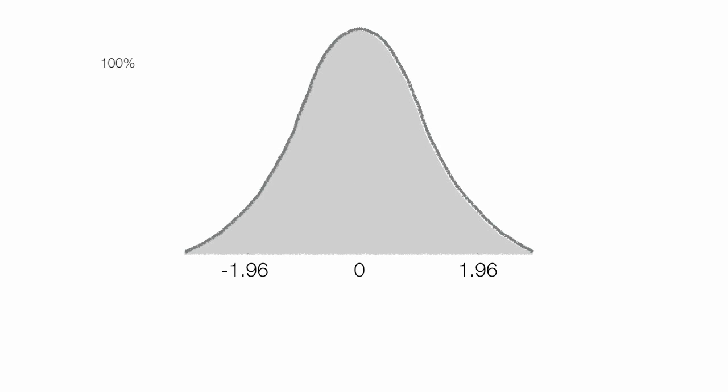I take 100%, and the probability between these two values, negative 1.96 and 1.96, is 95%. I take 100% minus 95% and this equals 5%.